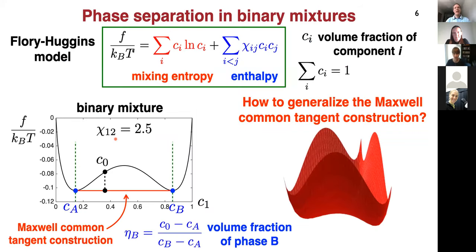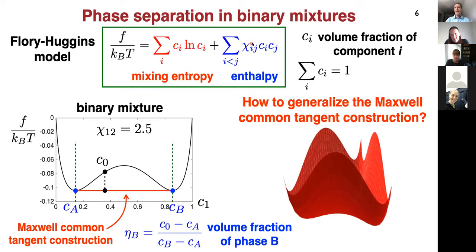Here we are going to ignore any active processes important in cells, and just study passive phase separation driven by thermodynamics. In all of these examples, we use the Flory-Huggins model, where the free energy density normalized by kT has two contributions: one from the mixing entropy and one from the interaction energy, where C_i are the volume fractions of the different molecules, going from 1 to N where N is the total number of components.